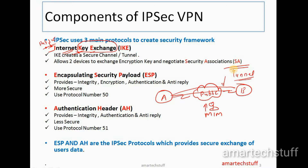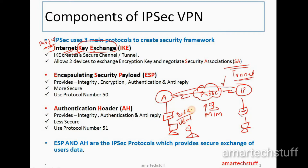The second main protocol is ESP — Encapsulating Security Payload. Note it is encapsulating, not encryption. The other one is AH — Authentication Header. ESP and AH do the same kind of work; you can use either one. What they do is provide secure exchange of the user's data. ESP specifically provides integrity, encryption, authentication, and anti-replay protection to the data.